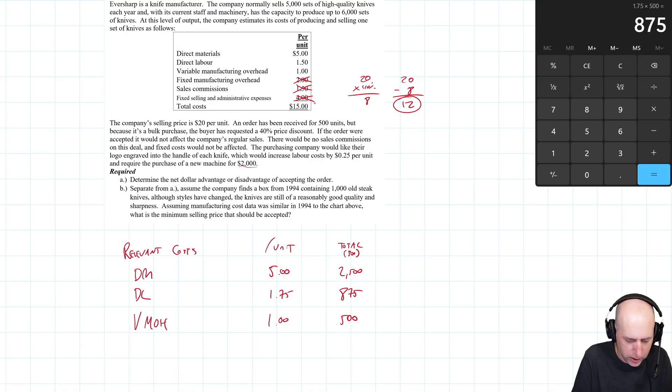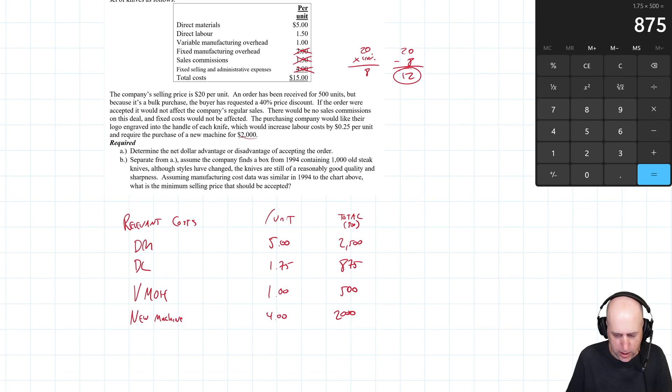But there are a couple of other relevant costs. The purchasing company would like their logo engraved, which would increase the labor cost by 25 cents. I've already considered that. And would require the purchase of a new machine for $2,000. So new machine and assuming the machine's not used for any other purpose, we can say, okay, this machine basically is used exclusively for this order. And that's $4 a unit that the machine adds to the order costs. So let's run the numbers here. And our total costs, 5 plus 1.75 plus 1 plus 4, $11.75, and of course times 500 is $5,875.